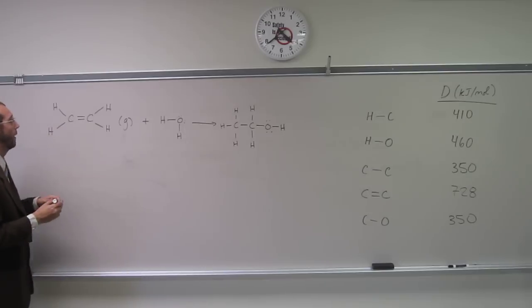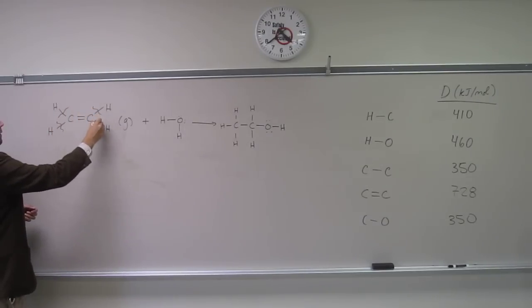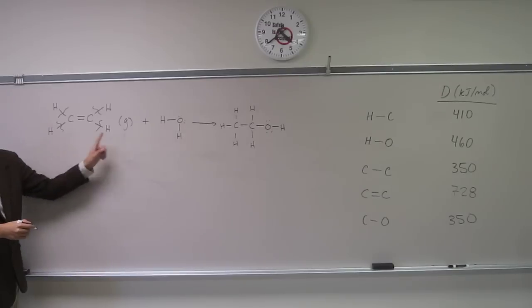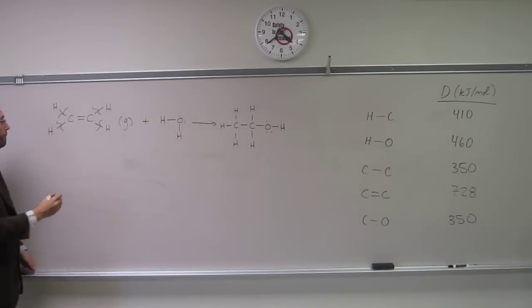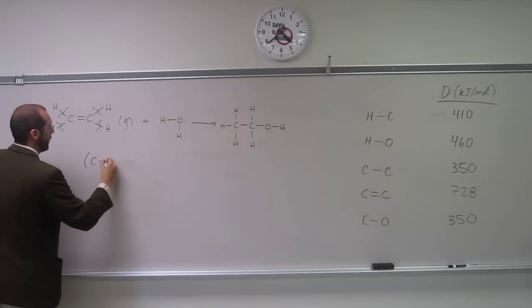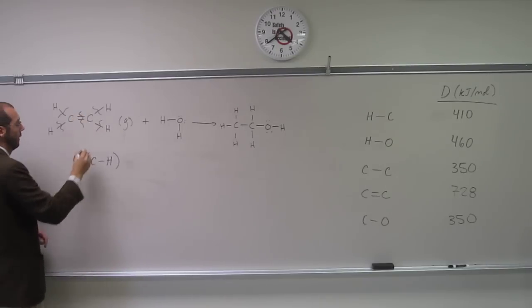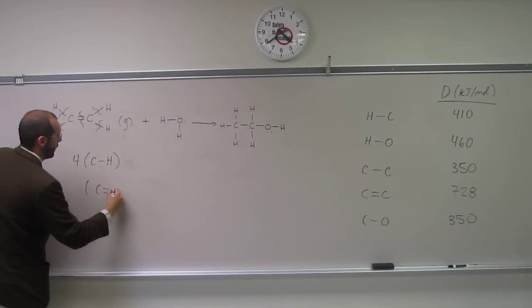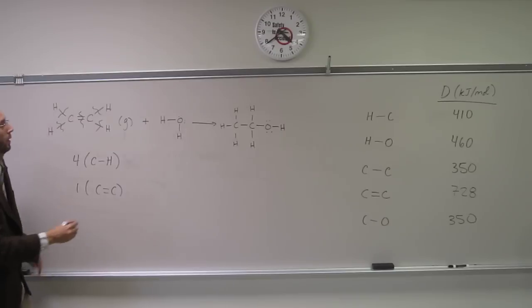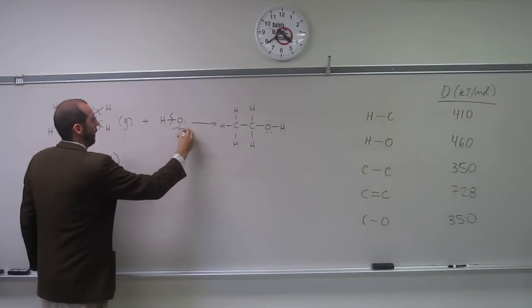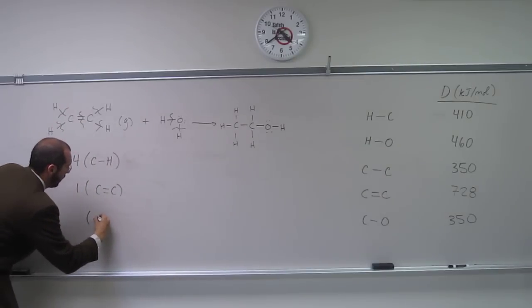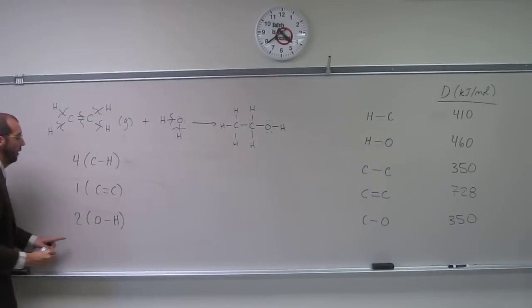In the reactants we have one, two, three, four CH bonds. Do you guys see that? We've got four CH bonds. We've got one C=C double bond and two OH bonds. Is everybody okay with that?